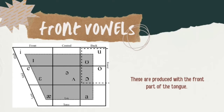Front vowels. What are front vowels? Front vowels are produced with the front part of the tongue. There are the sounds: /iː/, /ɪ/, /e/, /æ/, and /ɜː/.